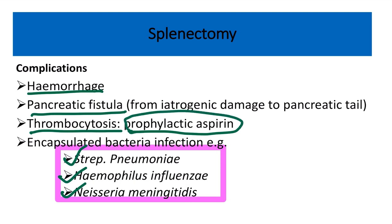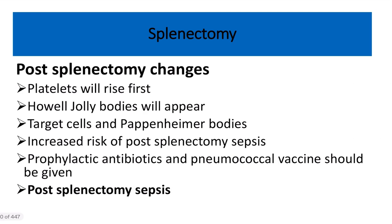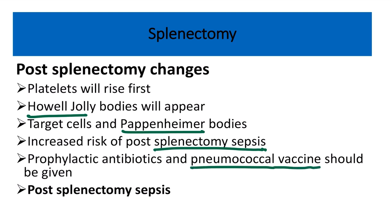In the case of thrombocytosis, prophylactic aspirin should be given. Post-splenectomy blood film changes include Howell-Jolly bodies and Pappenheimer bodies. There is an increased risk of post-splenectomy sepsis, so prophylactic antibiotics and pneumococcal vaccine should be given. After splenectomy, platelets will rise first — this is a very important point.